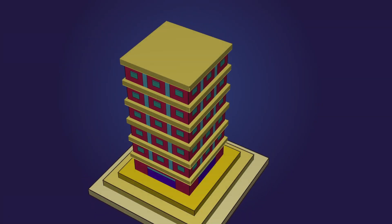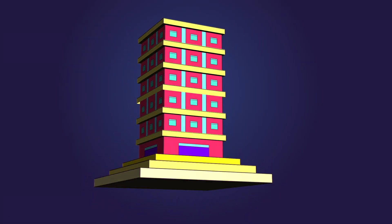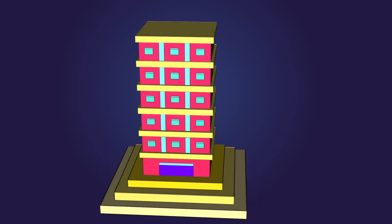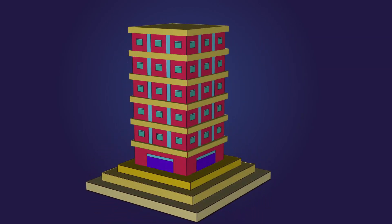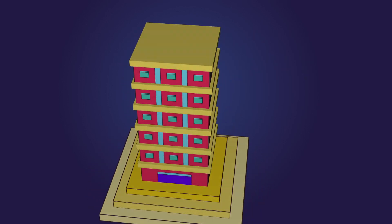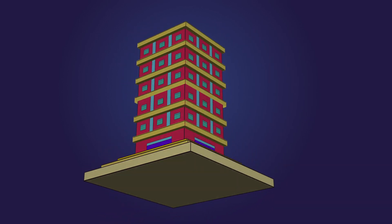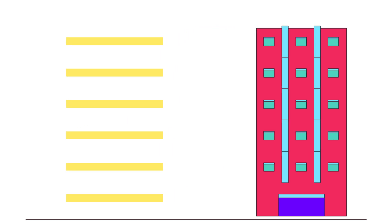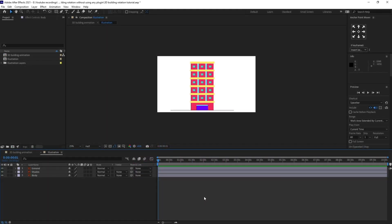Hello everyone, welcome to Proud Animator. In this video we are going to learn how to animate a 3D building rotation in After Effects without using any plugin. Before jumping onto animation, let's check out the illustration and the layer separations. This is the illustration we are going to be working on in today's lesson, and this is how the layers are separated.